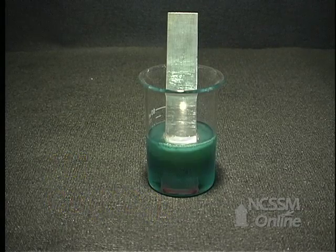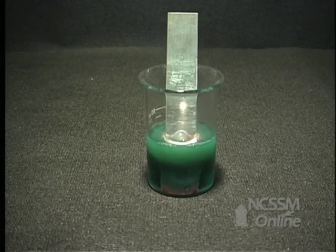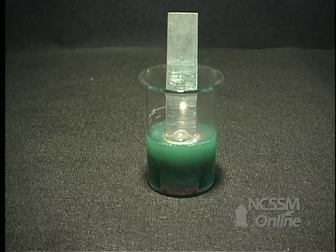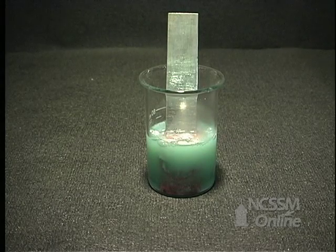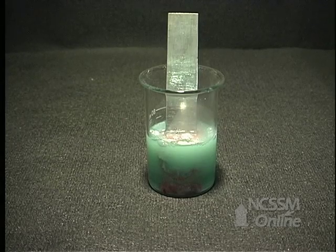The copper +2 ion gains electrons to produce reddish brown copper that falls to the bottom of the beaker. The colorless zinc +2 ions enter the solution. As the concentration of the copper +2 ions decreases, the blue color of the solution decreases.